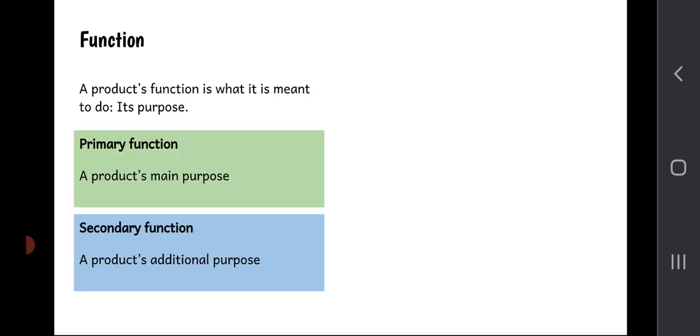Now a product's function is what it can do, it's its purpose. And in this course we talk about objects having a primary function and a secondary function. The primary function is the product's main purpose, and secondary functions are a product's additional purpose or purposes.